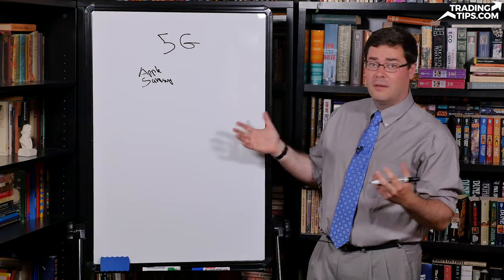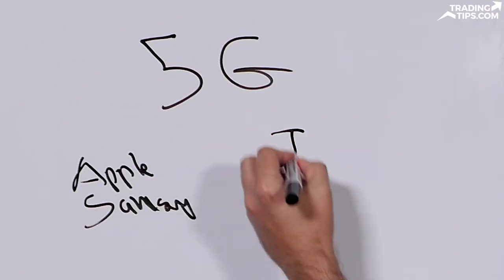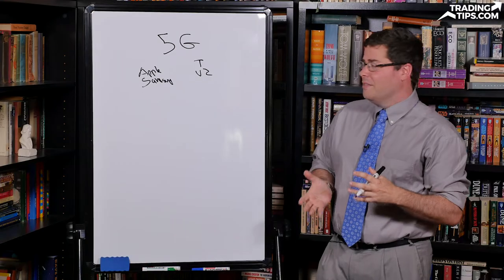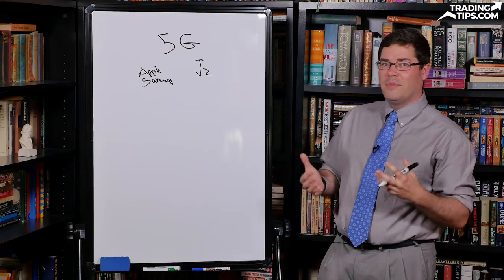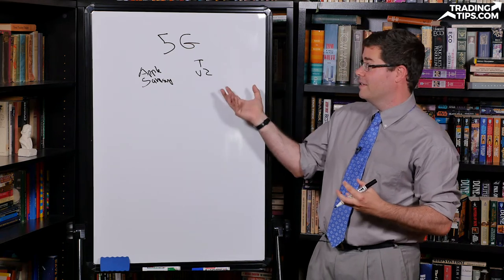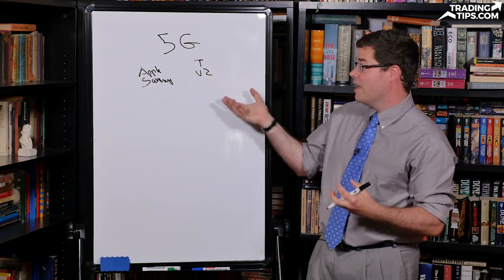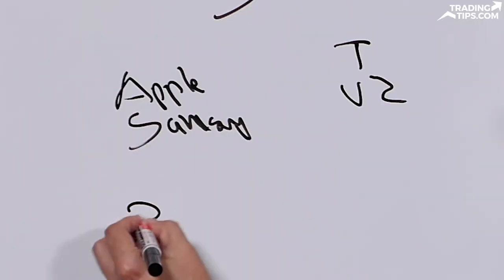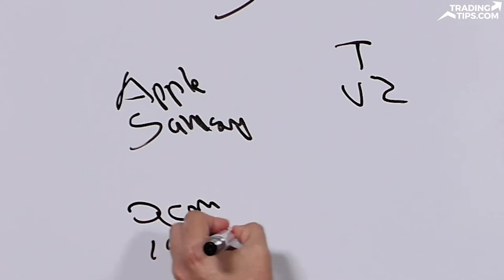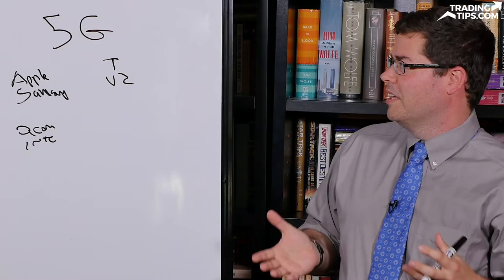And then you might have some of the telecom companies like your AT&T, your Verizon, some of these names here. But then you also have the companies that are making the devices that go into the cell phones that make it possible to access the 5G capacity through these networks. You've got your companies like Qualcomm, Intel, and a couple of other international names.